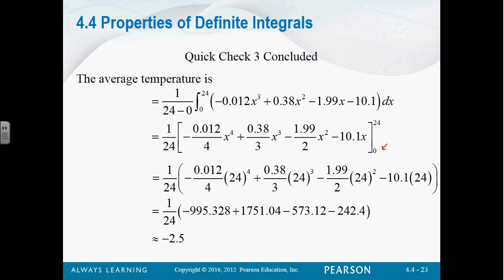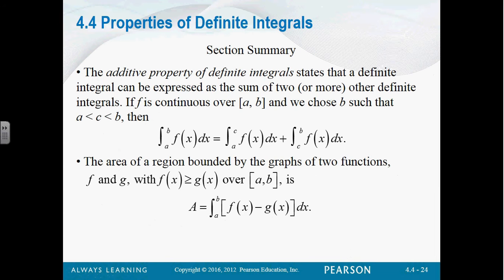So you get negative 2.5 — the average temperature on a given day in Minneapolis is negative 2.5 degrees Fahrenheit. That sounds reasonable in the dead of winter.